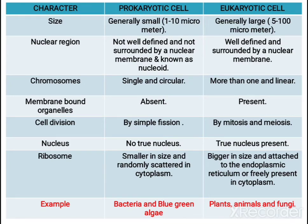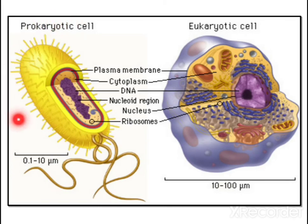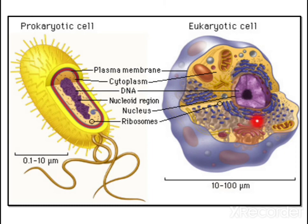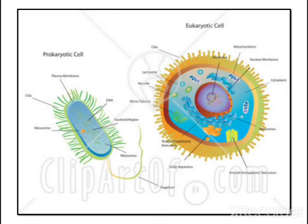Eukaryotic cells include plants, animals, and fungi. Simply, if a nucleus is present with a nuclear membrane and membrane-bound organelles, it is a eukaryotic cell. When there is no well-defined nucleus, it is a prokaryotic cell. In the diagram, the eukaryotic cell shows a well-defined nucleus, while the prokaryotic cell shows only the nucleoid region. Various organelles are visible in the eukaryotic cell's cytoplasm; in the prokaryotic cell there are no organelles — only ribosomes, which are loosely scattered and smaller in size.